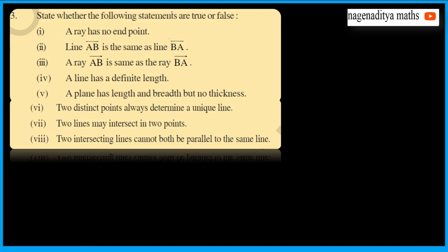State whether the following statements are true or false. 'A ray has no end points' — this is false, because a ray has one end point. 'Line AB is the same as line BA' — this is true, because AB is the same as BA.